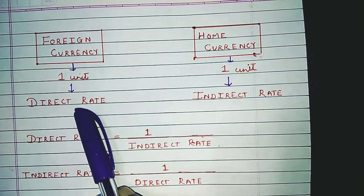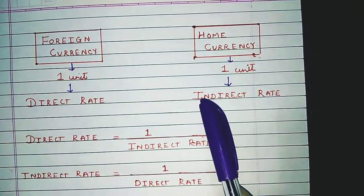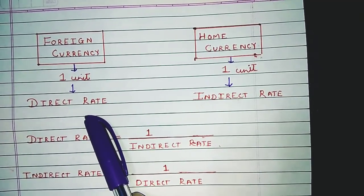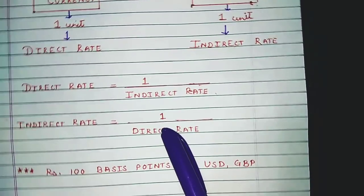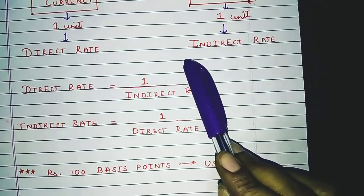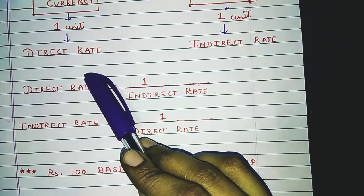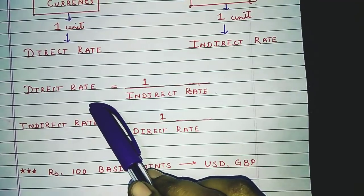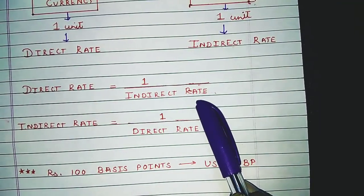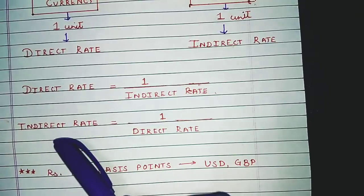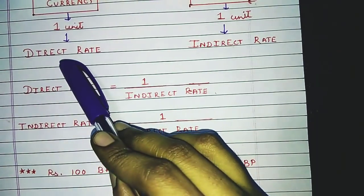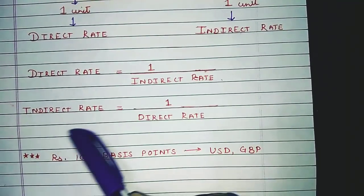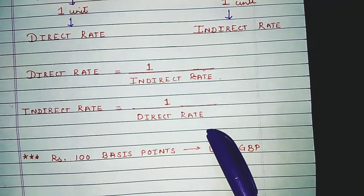You can convert the direct rate into an indirect rate, or the indirect rate into the direct rate. The formula is: if you want to convert the indirect rate into the direct rate, then direct rate = 1 divided by the indirect rate. And indirect rate = 1 divided by the direct rate.